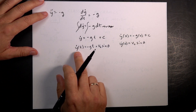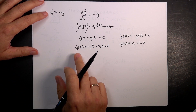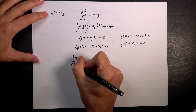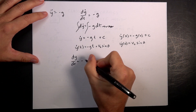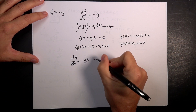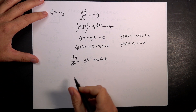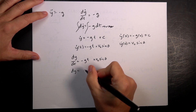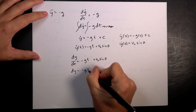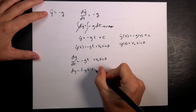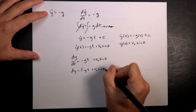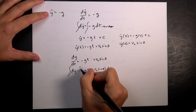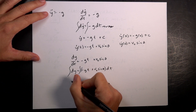Now I can integrate again. Instead of y dot, I can write dy dt equals negative g t plus v zero sine theta. I multiply both sides by dt, and I get dy equals negative g t plus v zero sine theta dt. Now I can integrate both sides again, and I get y.